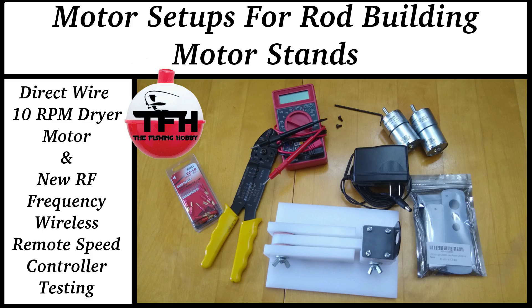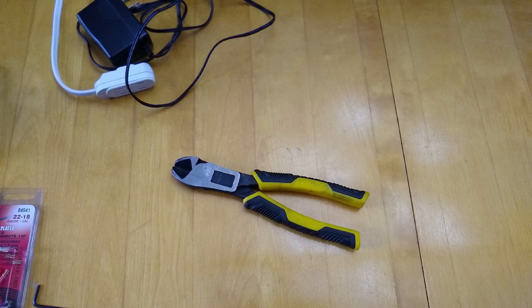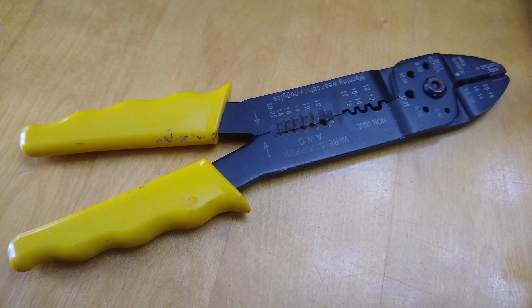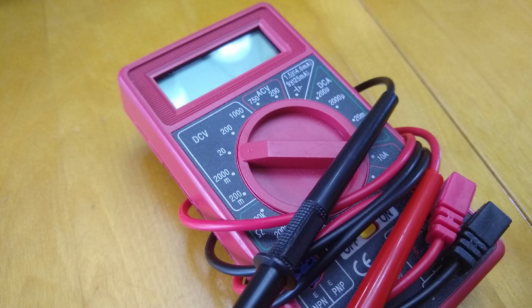In my last video I mentioned I was going to show some different ways of hooking up motors to these stands that I make. Today I'm going to show how to do a direct wire hookup, and I'm going to do that on a 10 RPM motor.